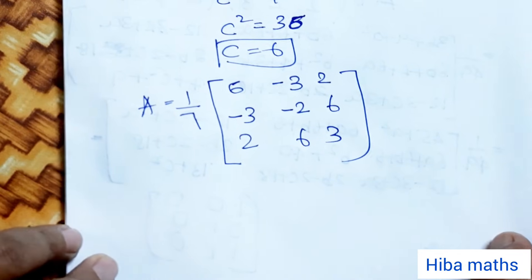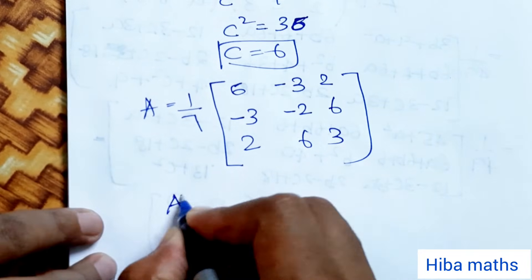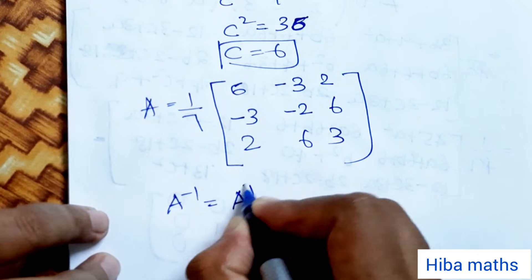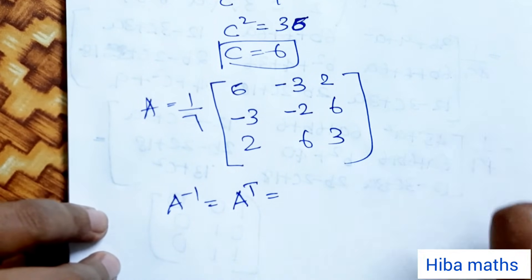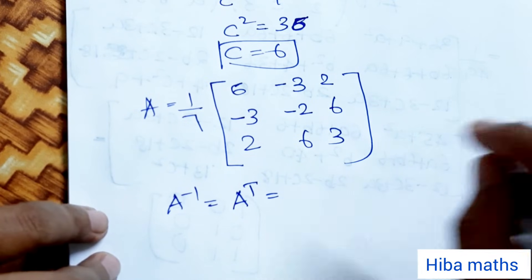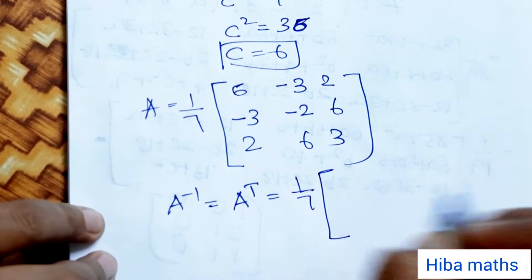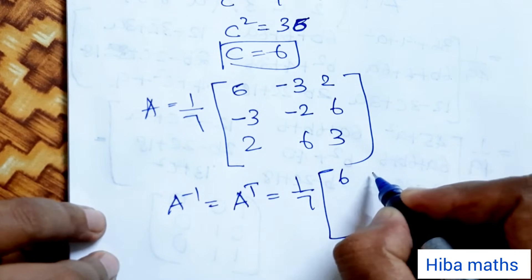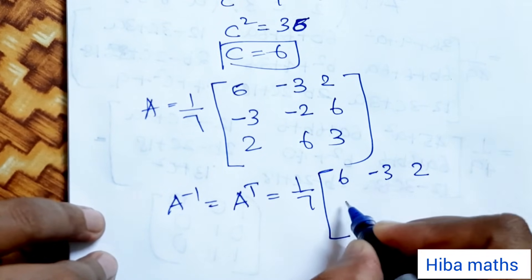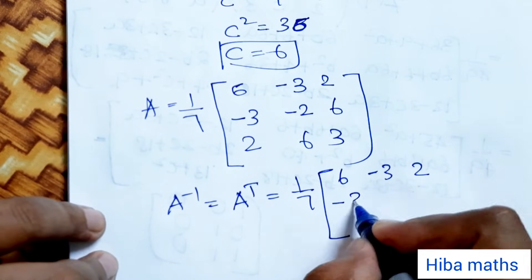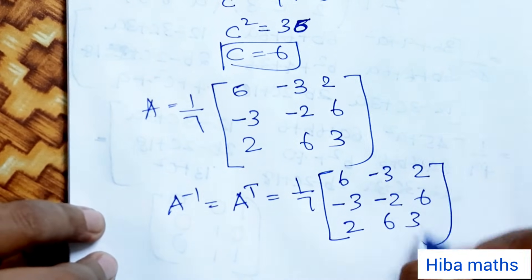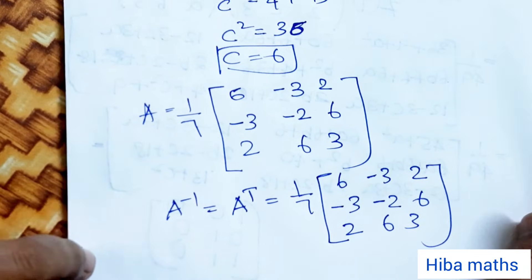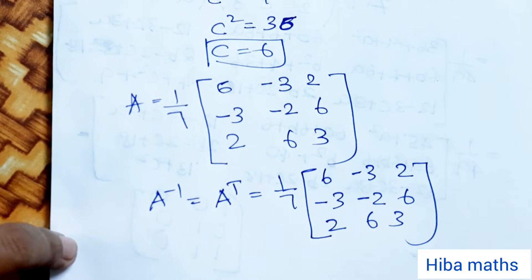Now substituting the a, b, c values into the matrix. To find A inverse, since A is orthogonal, A inverse equals A transpose. So A inverse equals 1 by 7 times the transpose of [6, -3, 2; -3, -2, 6; ...]. If you have any doubts, please comment. Thank you so much for watching.